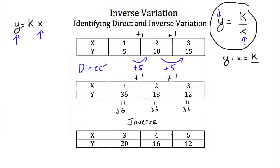In our last example, x values are 3, 4, and 5, and y values are 20, 16, and 12 — decreasing, so this cannot be a direct variation but may be an inverse variation. Checking y times x: 3 times 20 is 60, 4 times 16 is 64, and 5 times 12 is 60. We get 60, 64, and 60 — not the same — so this is neither a direct variation nor an inverse variation.